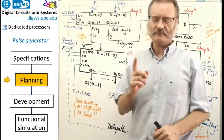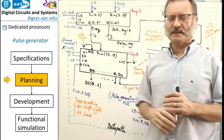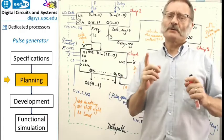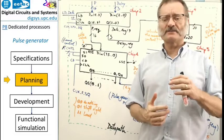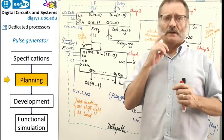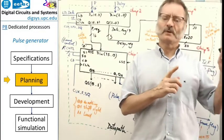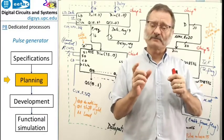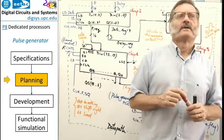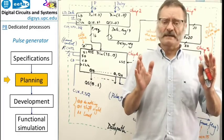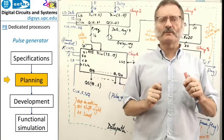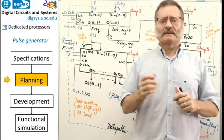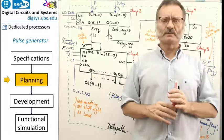After imagining the big picture of the dedicated processor, you can now go into every single component. For example, you can go back to study the debouncing filter or the RS flip-flop from P5, or you may try to imagine how the data path is going to be, because here it is the most important component.